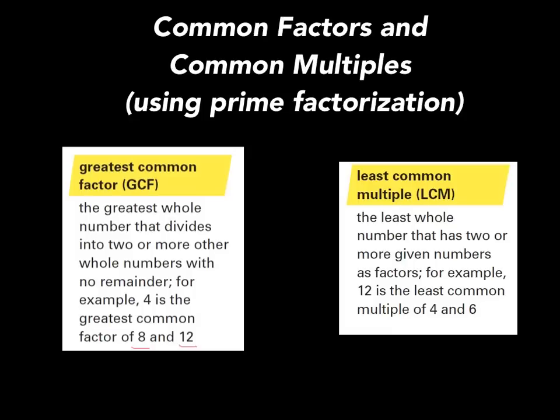The least common multiple is a number that has two or more given numbers as factors. For example, 12 is the least common multiple of 4 and 6 because both 4 and 6 will multiply to give you 12, and it's the smallest number that both of those numbers share as a multiple.